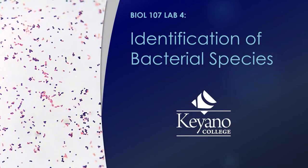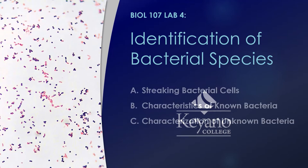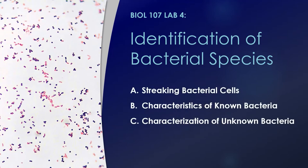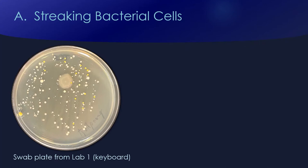Biology 107, Lab 4: Identification of Bacterial Species. In today's lab we are going to do three exercises: we are going to streak some cells from a mixed culture, we are going to characterize some known bacteria, and then we're going to characterize some unknown bacteria. To talk about streaking, I want to show you this plate from Lab 1.